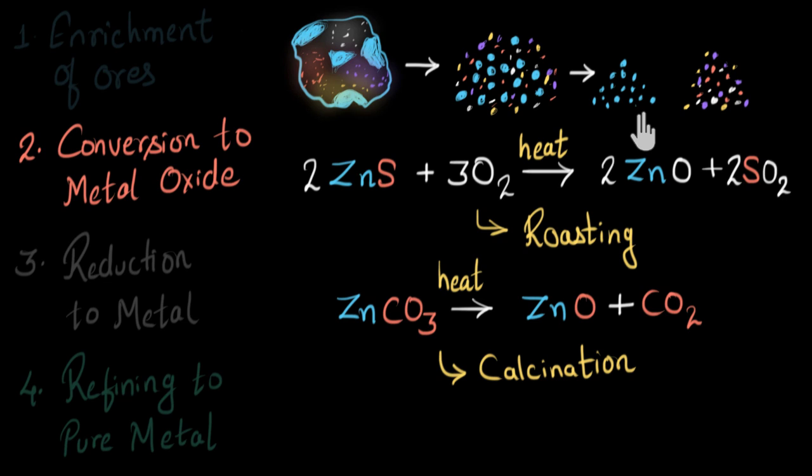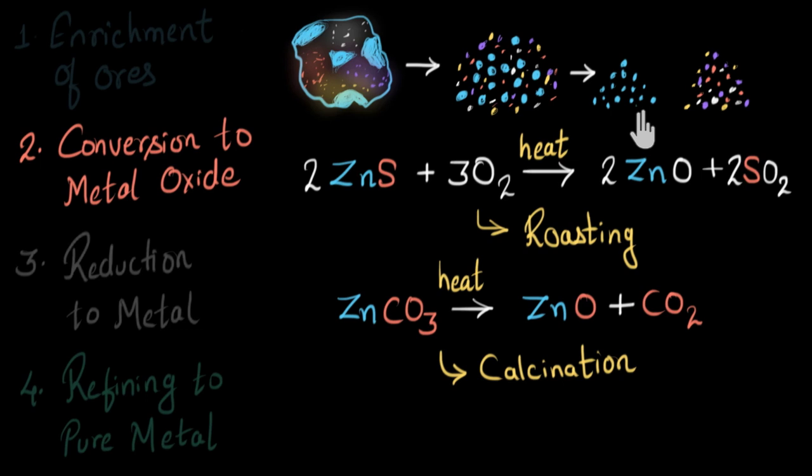So in the second step, we converted the metal compounds that were in the form of sulfides or carbonates into oxides, and for this, we used roasting or calcination process. Now in future videos, we will see how we can remove the oxygen out of these metal oxides and reduce them to get metal. And after we have got the metal, we will see how to refine those metals to get pure metal, 99.99% pure metal.